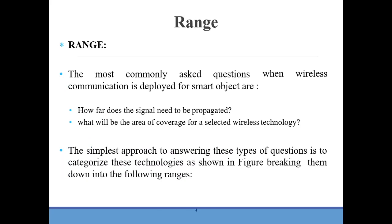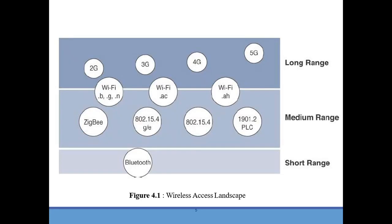Let us look into the first communication criteria: range. Range in an electronic communication system is the largest distance between the source and the destination up to which the signal is received with sufficient strength. The most commonly asked questions when wireless communication is deployed for smart objects are: How far does the signal need to be propagated? What will be the area of coverage for a selected wireless technology? Should indoor versus outdoor deployment be differentiated?